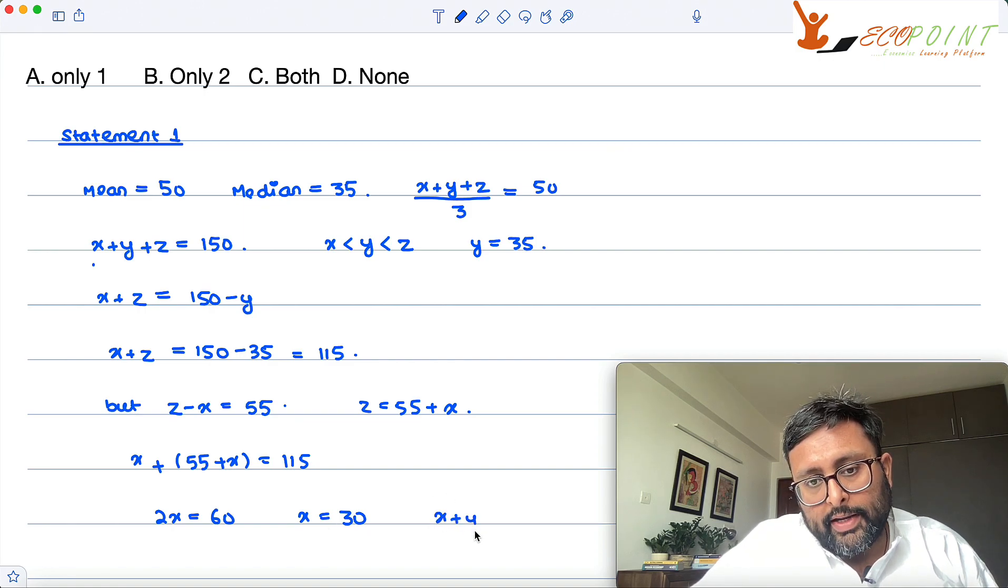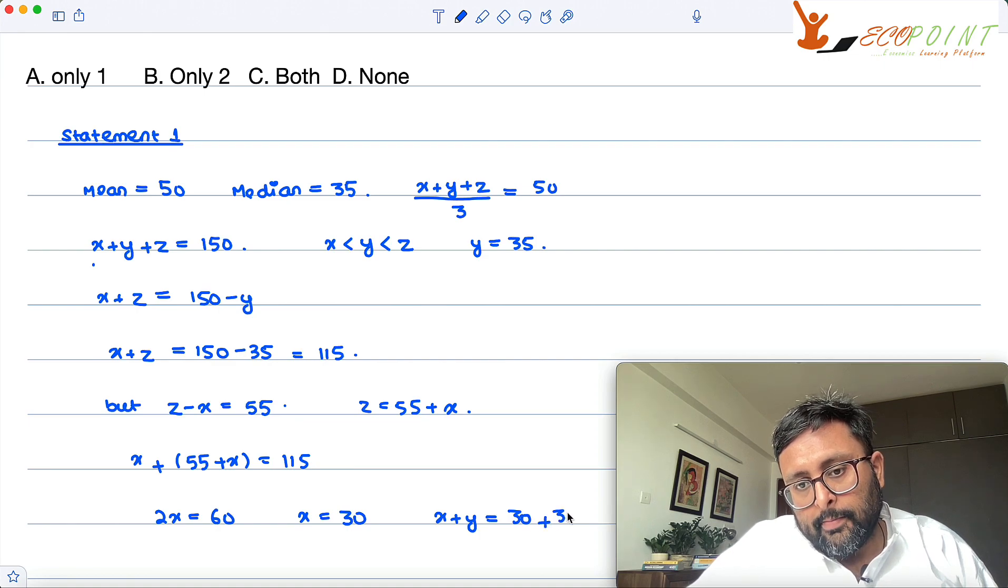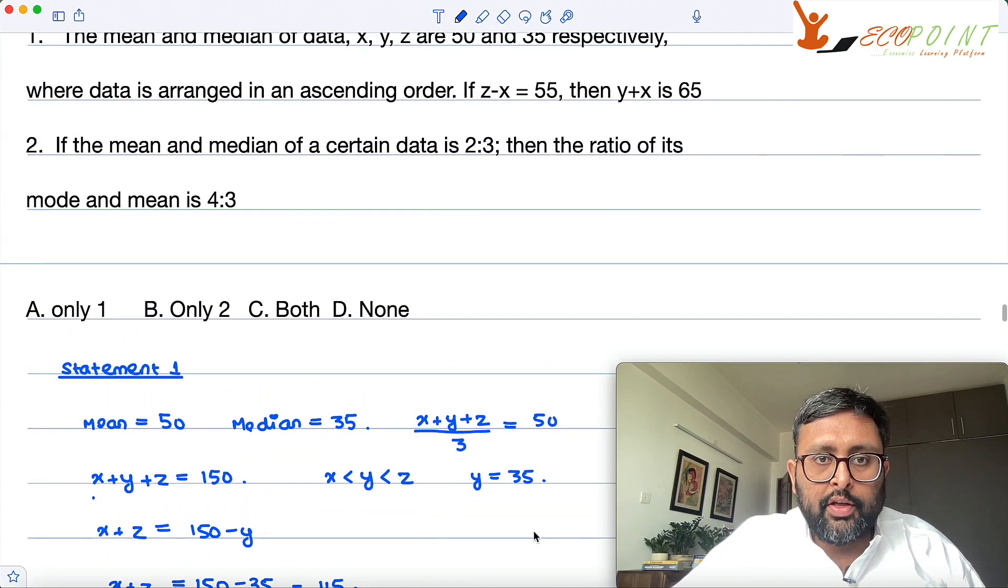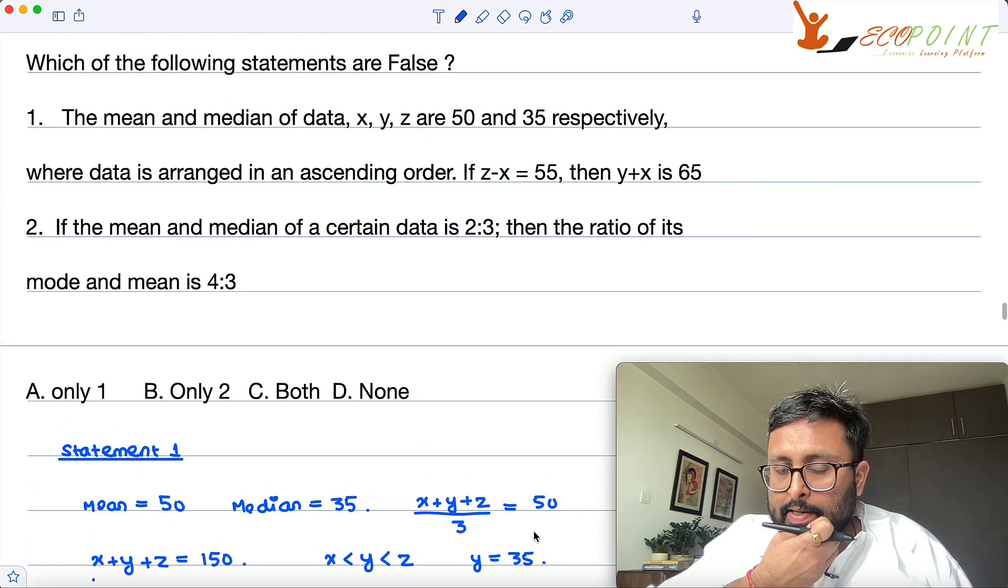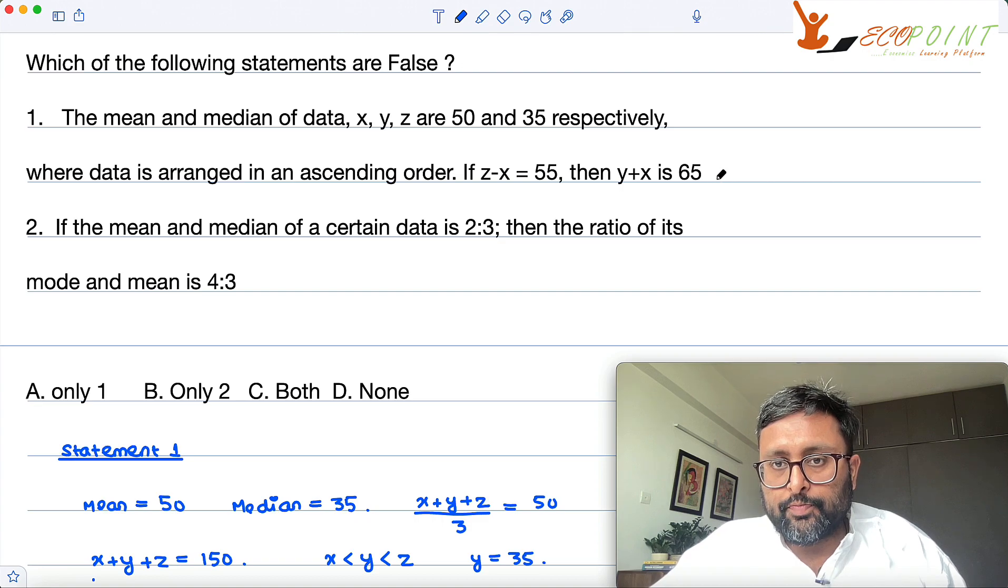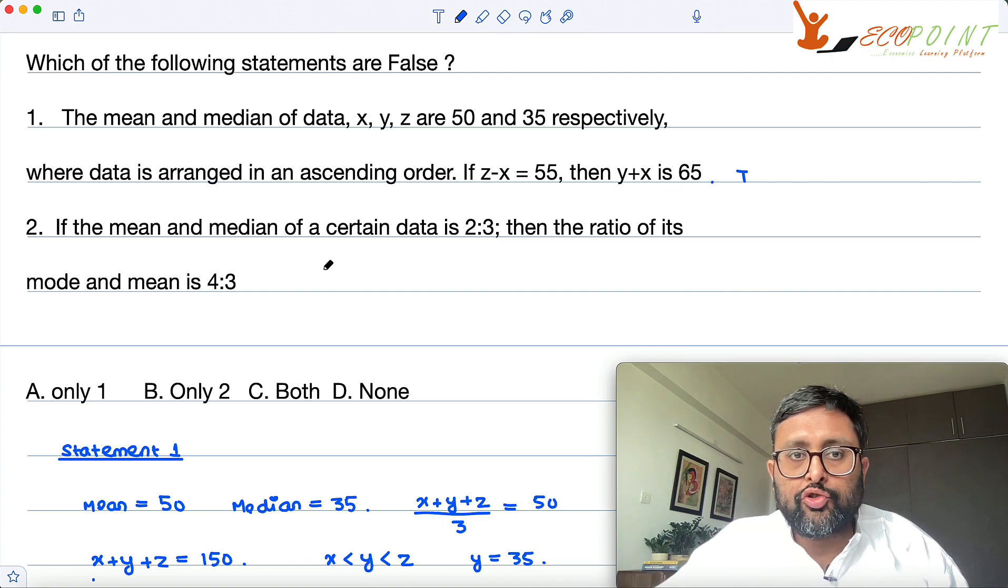So beta x plus y in that case is going to be what? 30 plus 35, that comes out to be 65. That comes out to be 65. So this statement is true. This is not false. This statement is true, right?